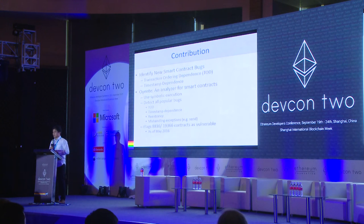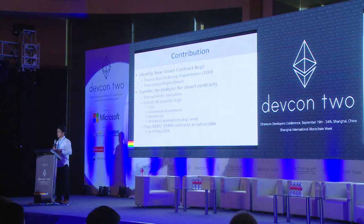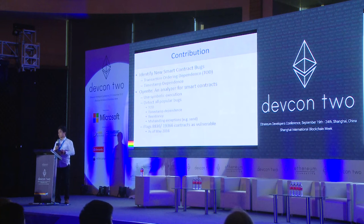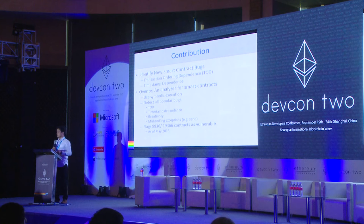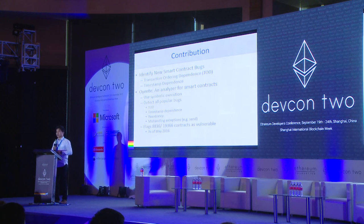What we contribute in this project is: first, we identify new smart contract bugs, namely transaction ordering dependence and timestamp dependence, which I'll talk about shortly. Second, we introduce Oyente, a new analyzer for smart contracts based on symbolic execution. Oyente can detect all the popular bugs, including both known and new ones. We ran Oyente on almost 20,000 smart contracts and were able to flag roughly 9,000 of them as vulnerable.